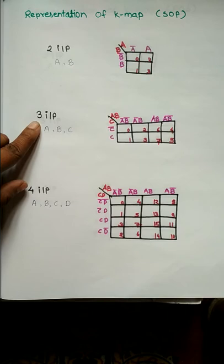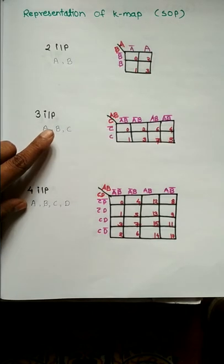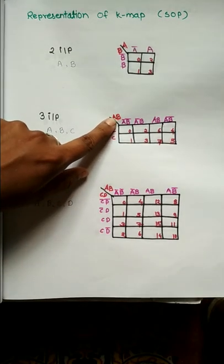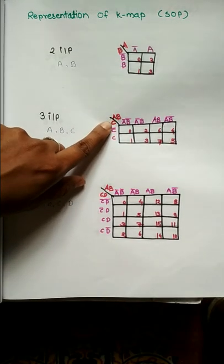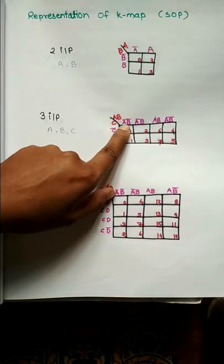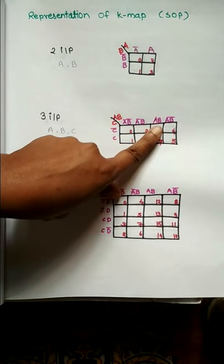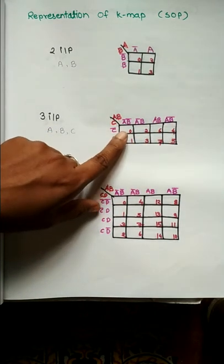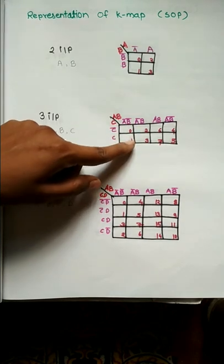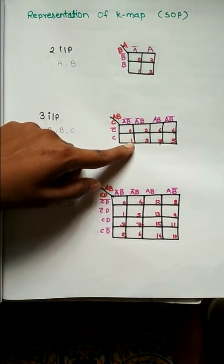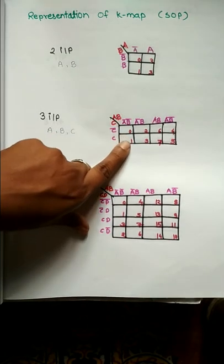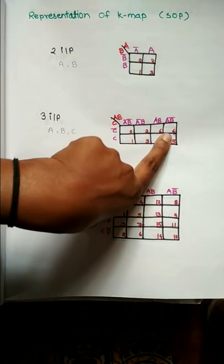Numbering, please focus on numbering, that will be somewhat moving. Then go for next one: three input K-map. Three inputs are A, B, and C. Here I write A and B inputs, here we go for C input: A'B', A'B, AB, and AB'. Here C' and C. Numbering, please focus, that will be somewhat changed: 0, 1, 2, 3, 4, 5, 6, and 7.